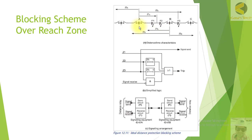Station B will also see the fault in zone 1 in the forward direction. In this case, the relay at station A will pick up and wait for any blocking signal — for example, you can set a timer of 400 milliseconds. Since the fault is in the forward direction, the relay at station B will not send a blocking signal, and the relay will trip within the set time, which is always less than the zone 2 time — very fast.